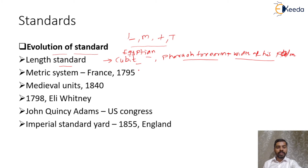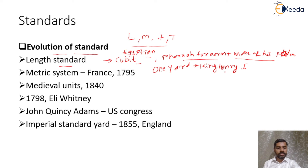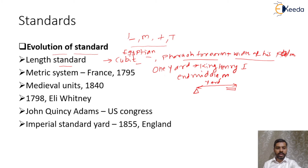Later, different standards were developed: the actual foot length of a great monarch was defined as a foot. Then King Henry I declared that the distance from the nose to the end of the middle finger, with arms fully stretched, was called one yard. So the distance between the nose and the tip of the middle finger with arms fully stretched was defined as a yard, developed by King Henry I in the ancient era.